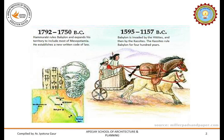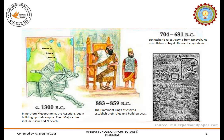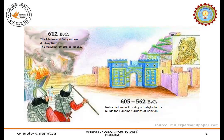King Hammurabi established a new written code of law for his people. Babylon was invaded in 1595 BC and was ruled by the Kassites for 400 years. Overtaking them in northern Mesopotamia, the Assyrians began building up their empire. Their major cities included Assur and Nineveh. They built beautiful palaces, the most famous being the Palace of Sargon in Khorsabad. They were also the first empire to establish a royal library of clay tablets. The Assyrian Empire collapsed and a new Babylonian Empire was established — an even bigger and grander empire ruling most of Mesopotamia. Their prominent king was Nebuchadnezzar II who commissioned the Ishtar Gate, the Hanging Gardens of Babylon and the Tower of Babel.